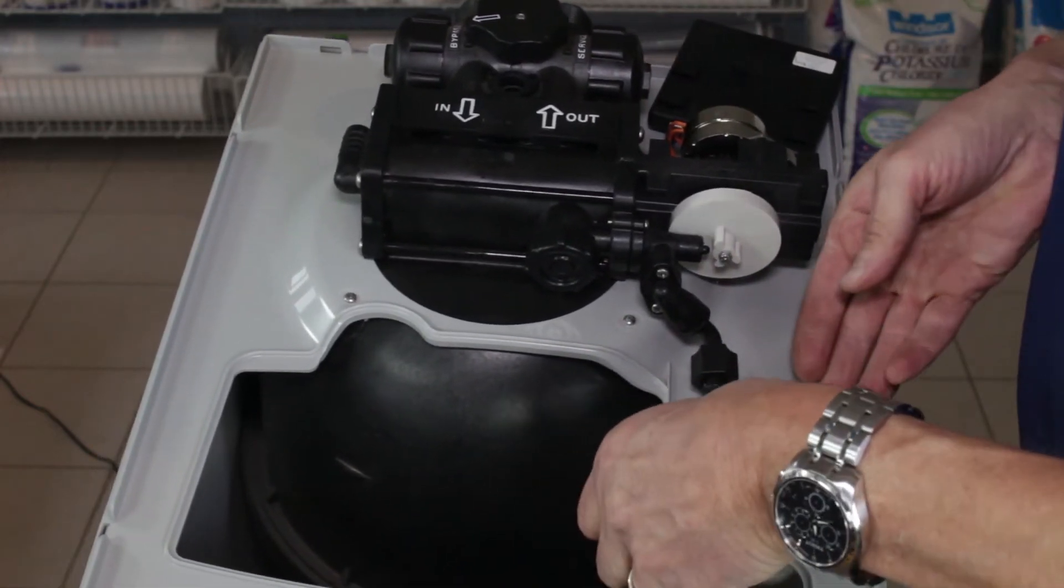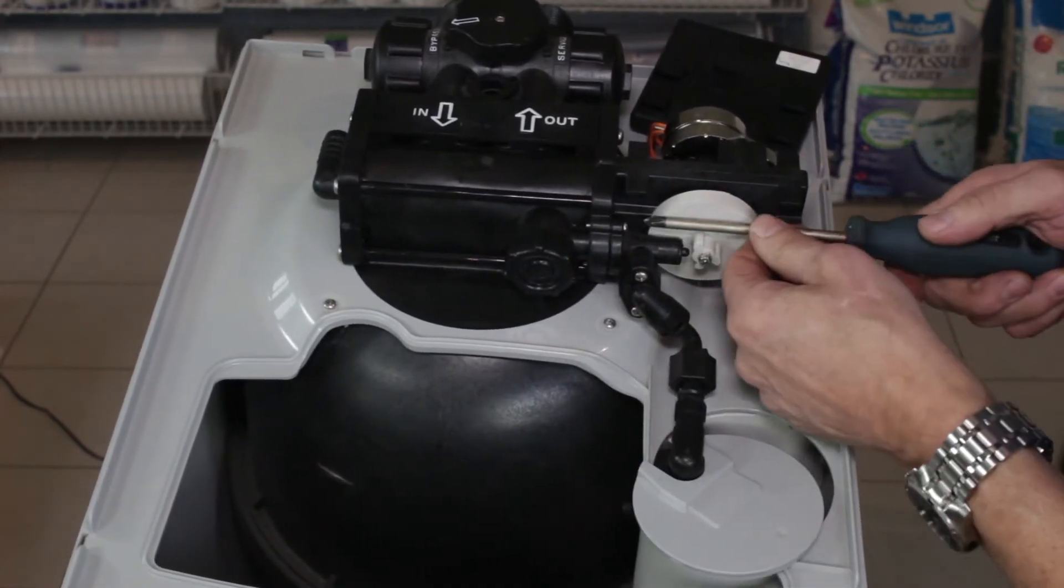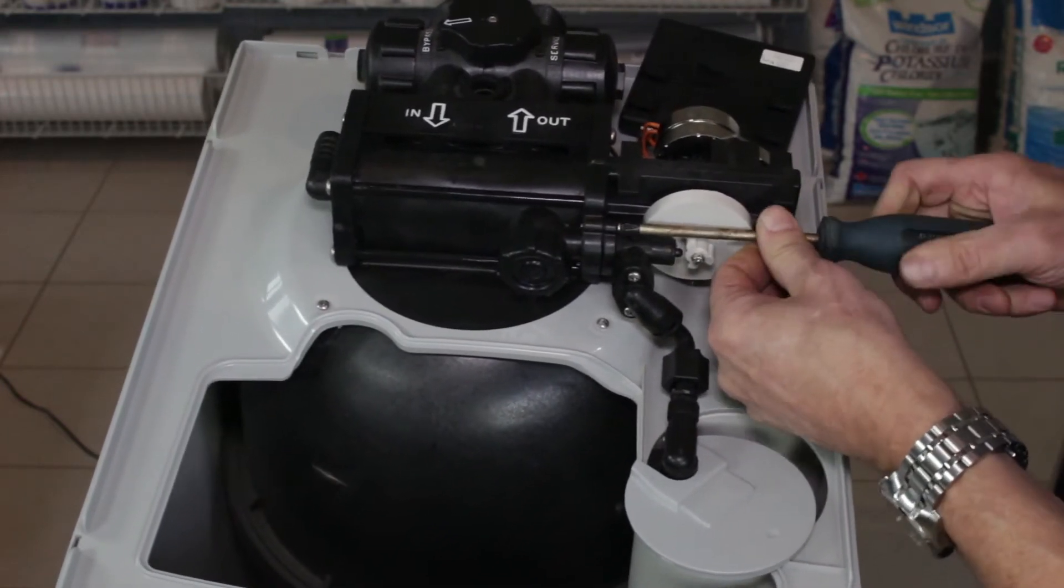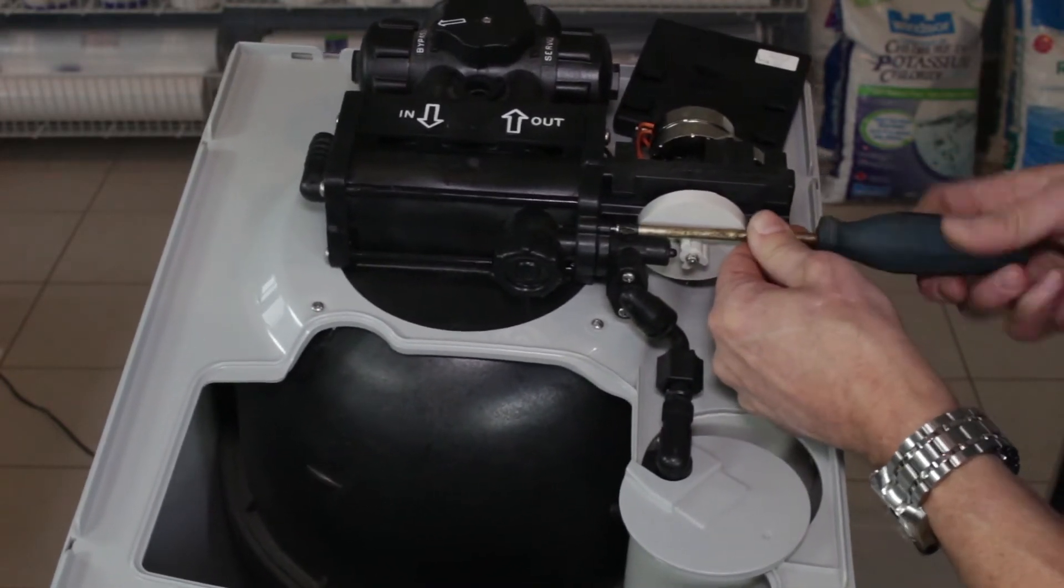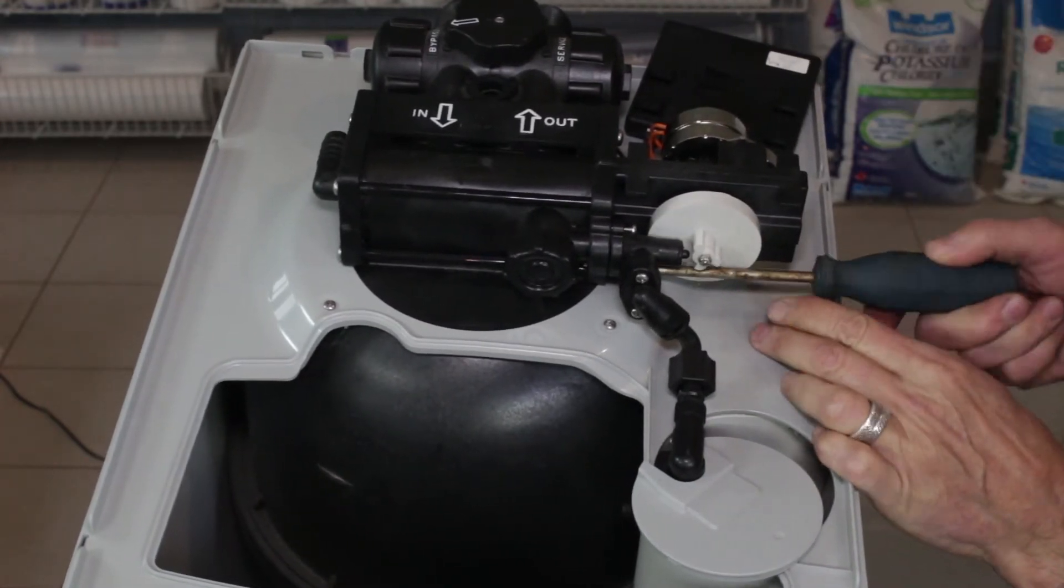So if we just pry up this cap a little bit, it gives us a little better access. We'll use a Phillips screwdriver to remove the piston from the drive-in cap assembly. There's one at the bottom and one at the top.